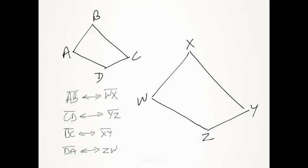So that means that side AB is going to correspond with side WX. CD will correspond with side YZ. BC will correspond with XY. And DA will correspond with ZW.